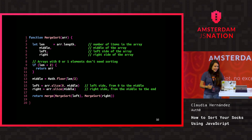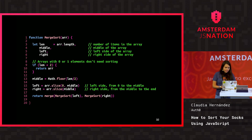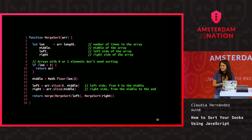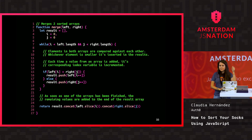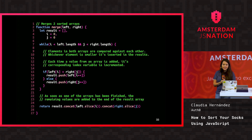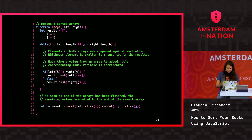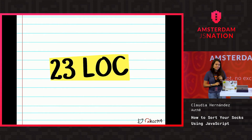The merge function receives both arrays, builds a result array, and uses a while loop with a pointer at the first element of each array, comparing them and placing the smaller one into the result array. Nothing out of this world — just a function with a while loop, making comparisons and swaps. If you remove all comments and new lines, this is just 23 lines of code. Really easy to implement.